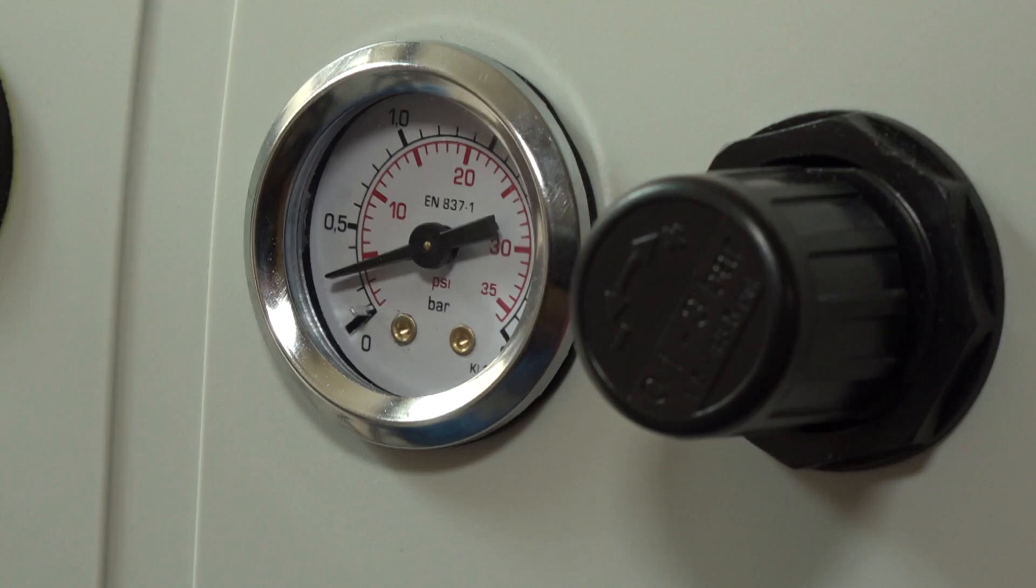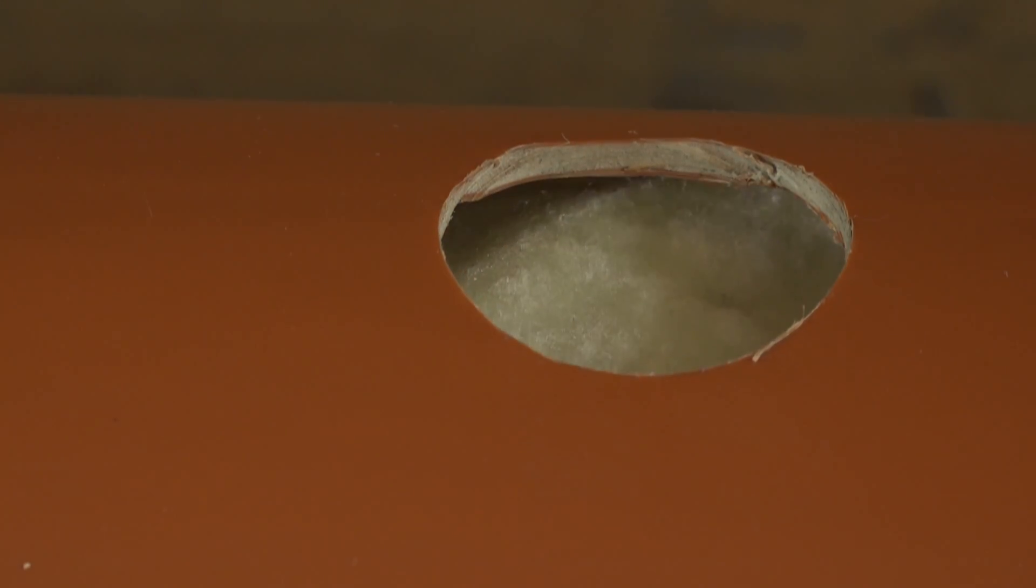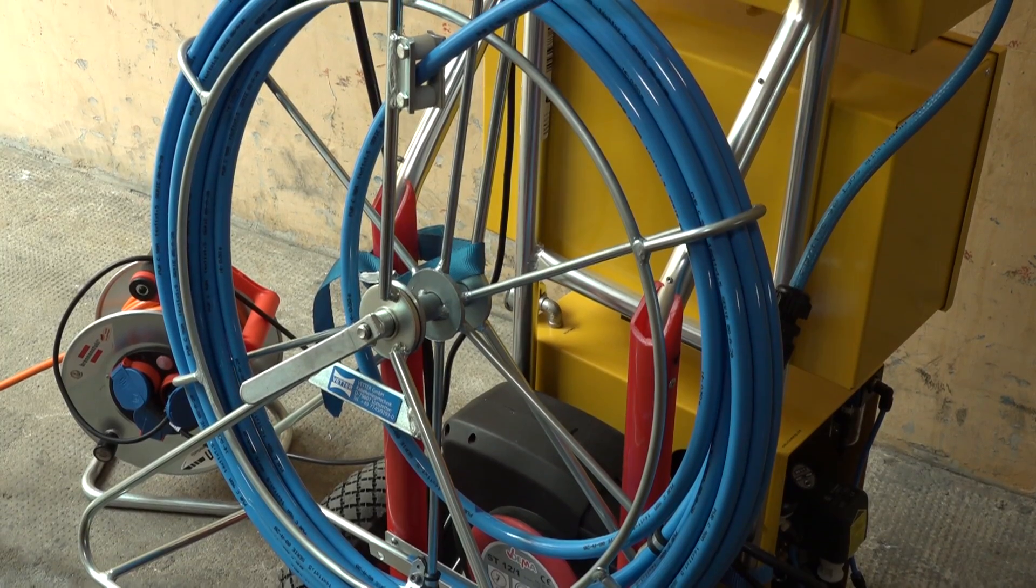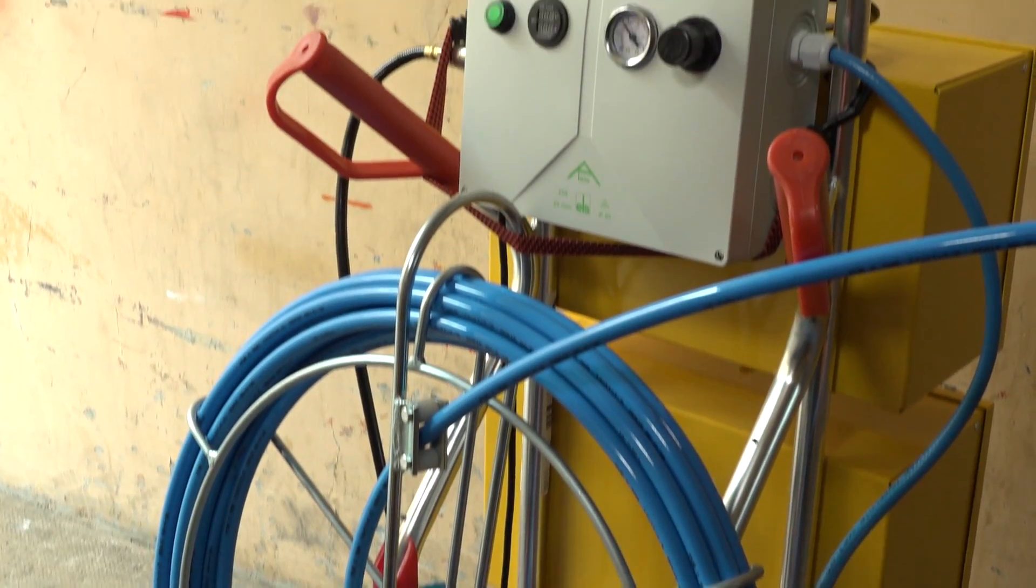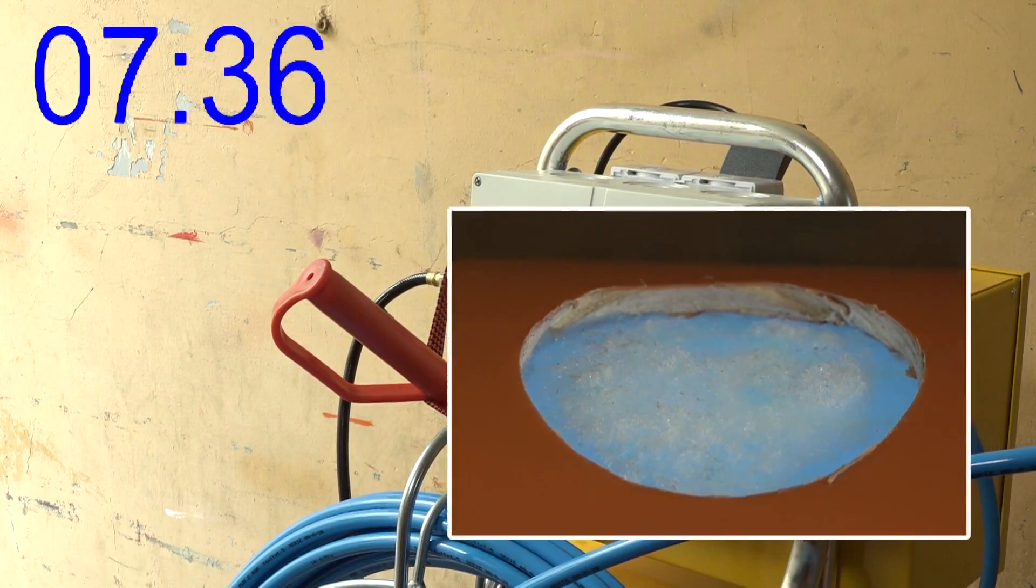Once the packer is in position, it is set up with the help of compressed air via the control box. Important! Only when the compressor switches off and the air pressure is correct, the UV light will be switched on.